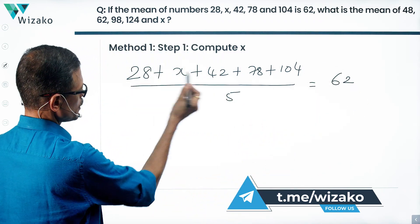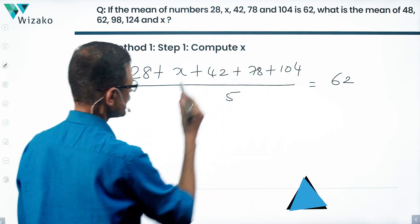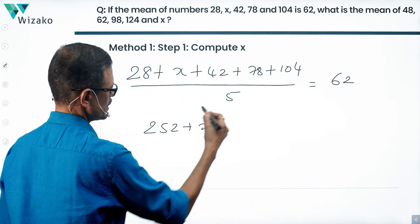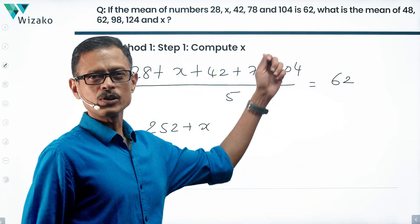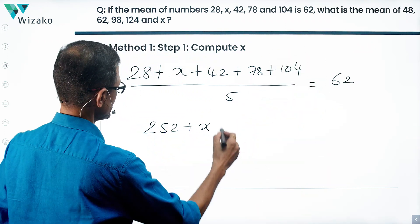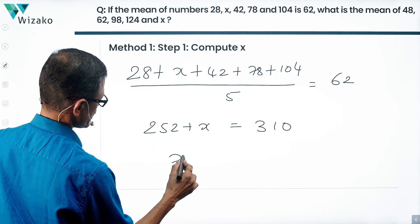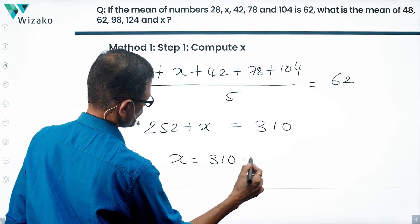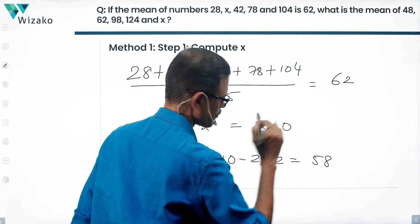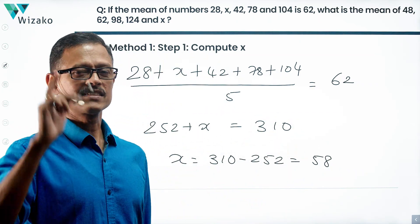So 28 plus 42 is 70, then 148, then 252. 252 plus x — cross-multiply. 62 into 5 is 300 plus 10, which is 310. So the value of x is equal to 310 minus 252, which is equal to 58. x is 58.